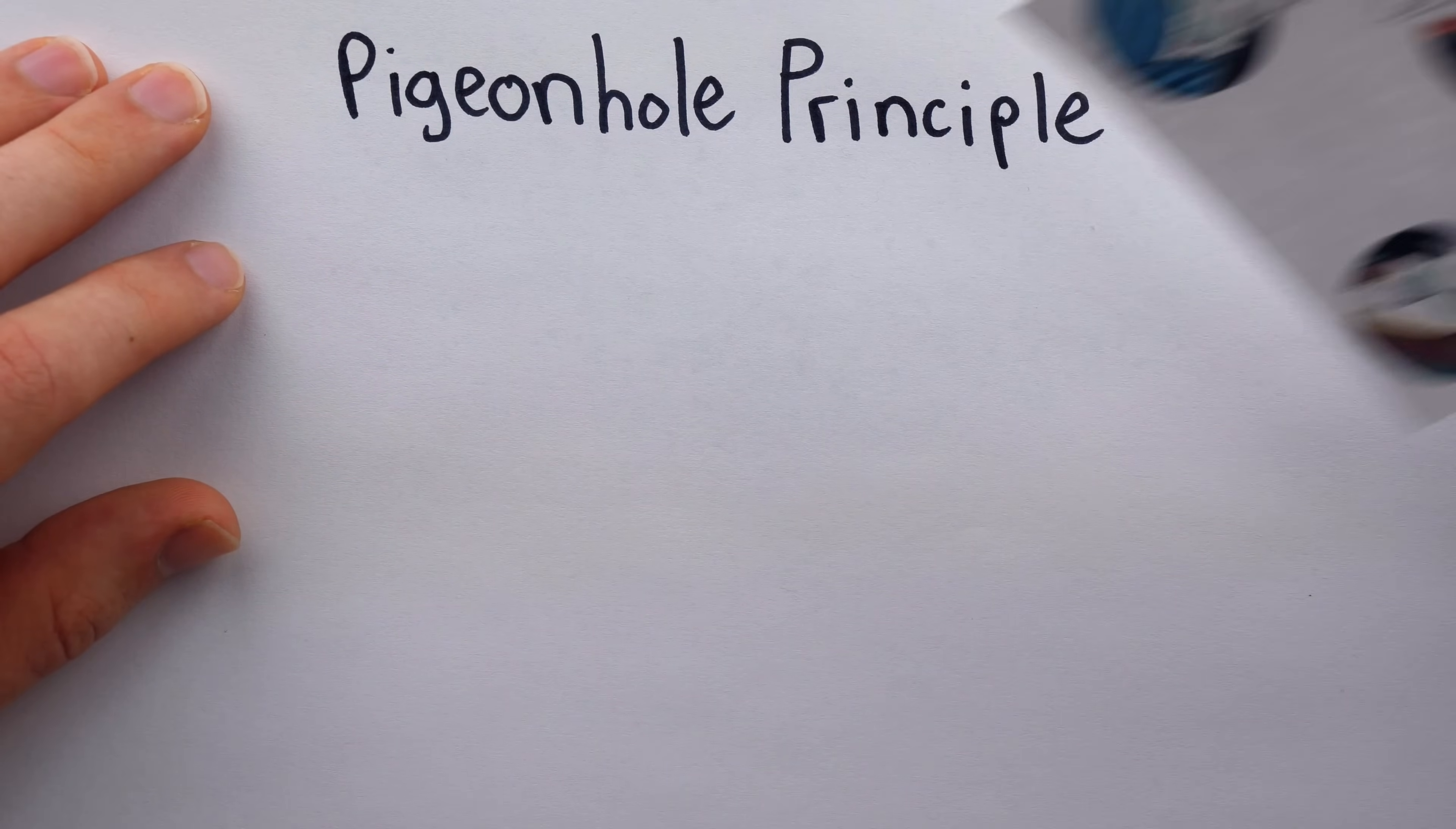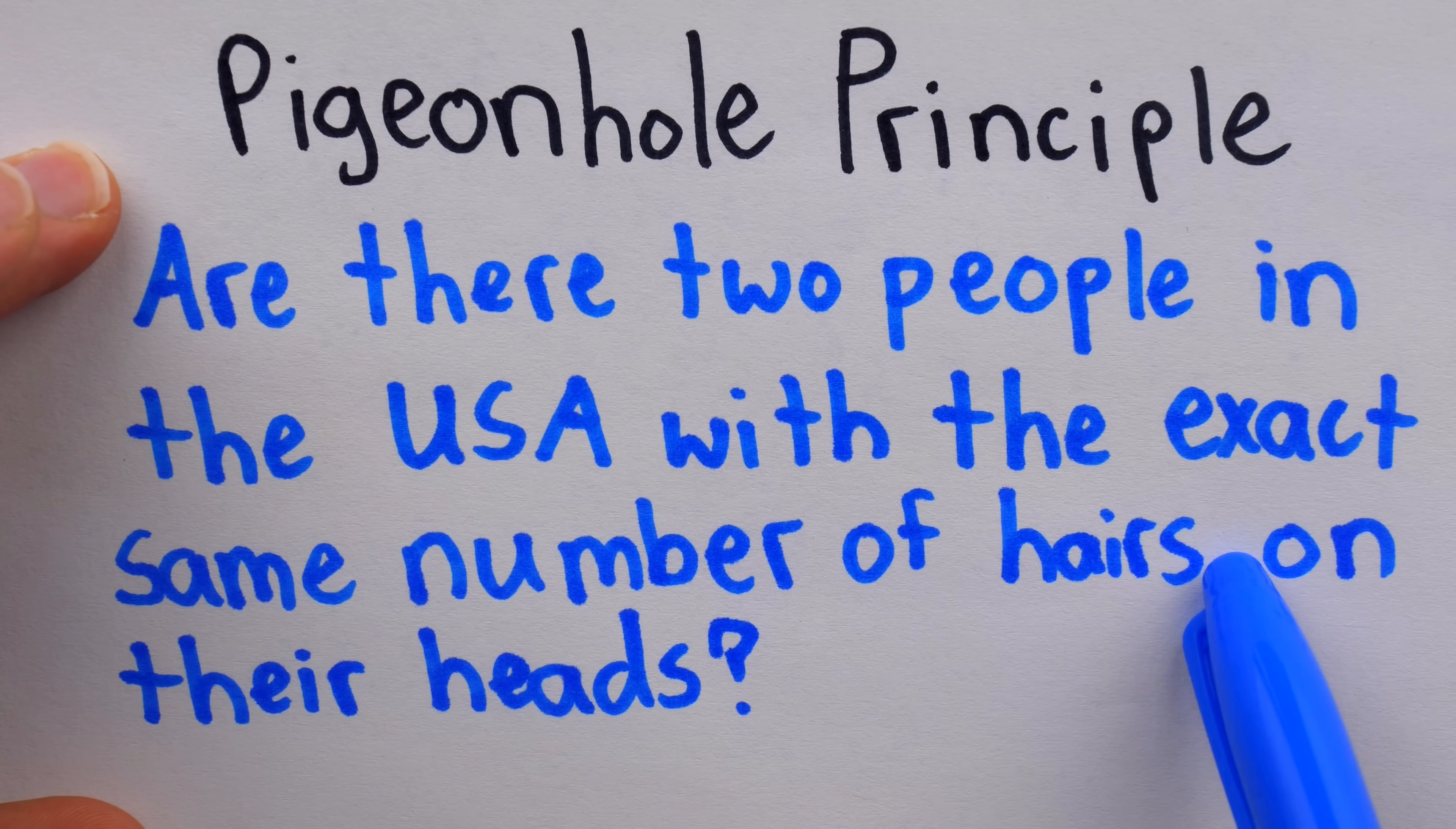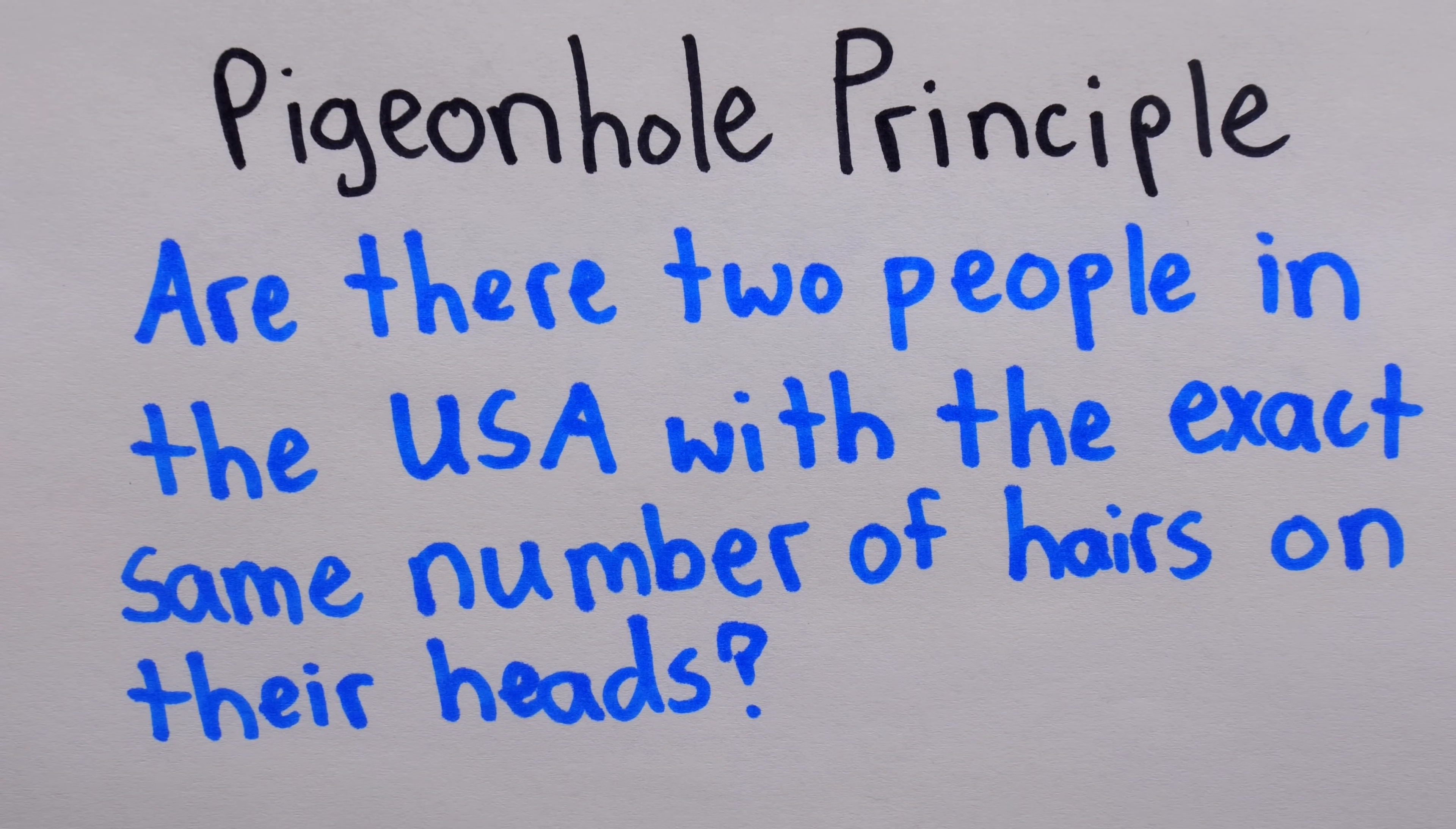It seems obvious, but it's a really surprisingly useful result throughout combinatorial mathematics. You can also use it to answer a kind of gimmicky question like this: Are there two people in the USA with the exact same number of hairs on their heads? Some people may think, well, probably not.